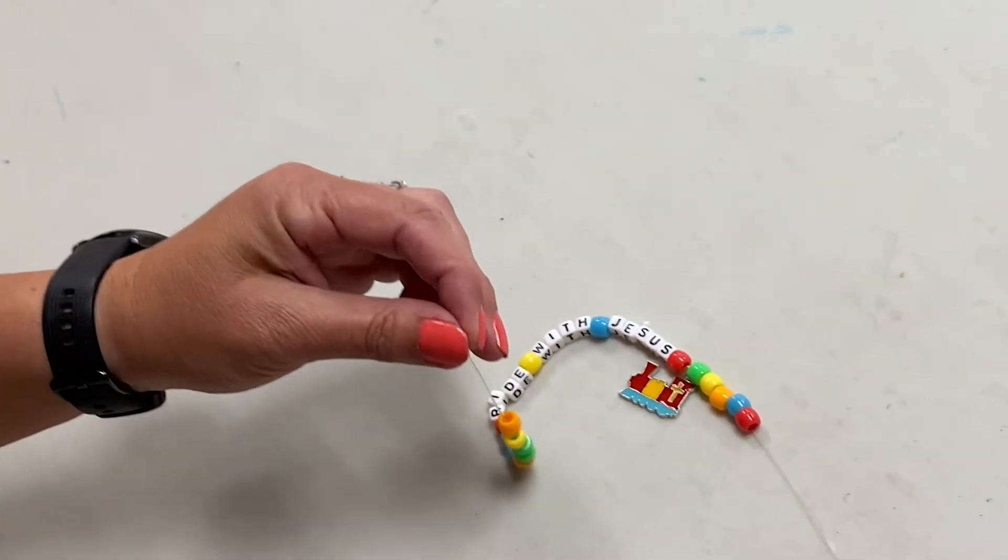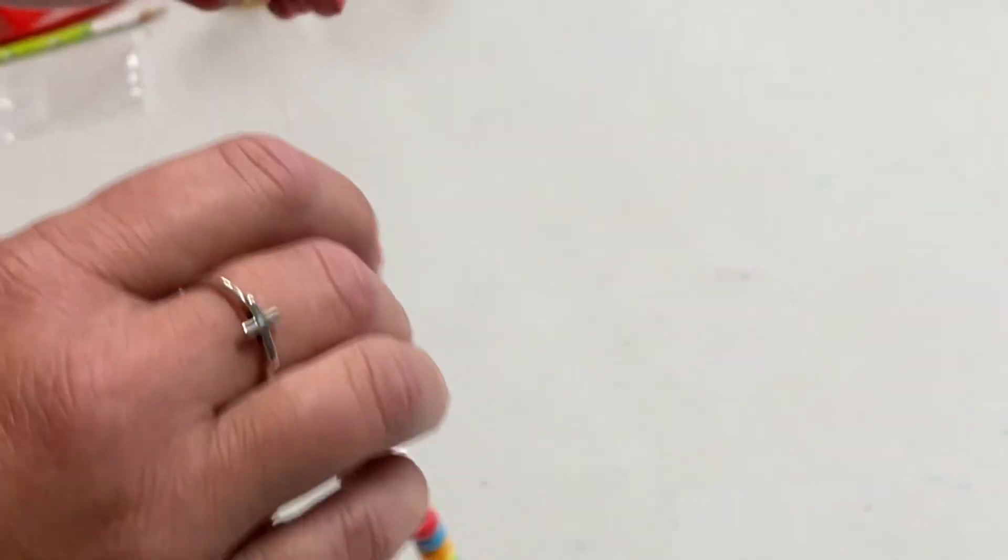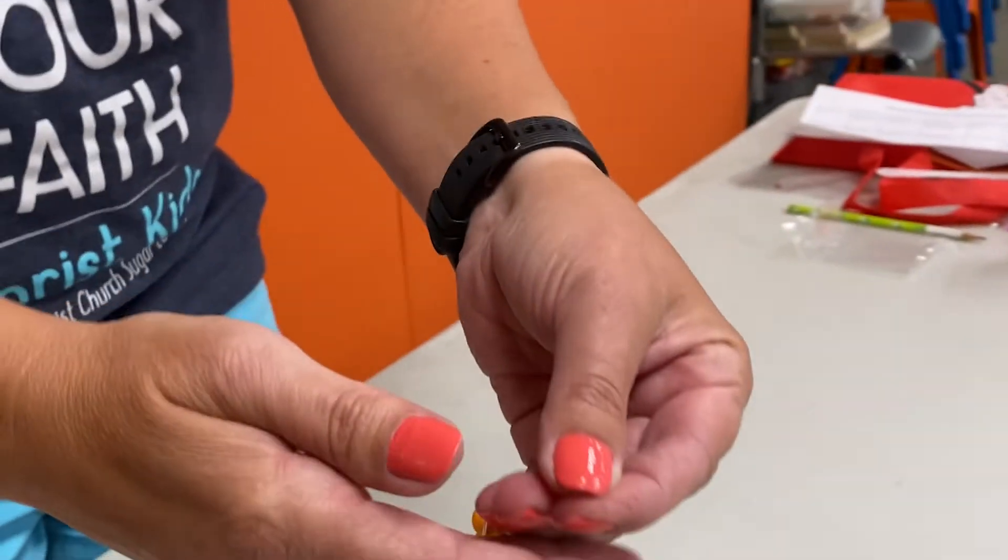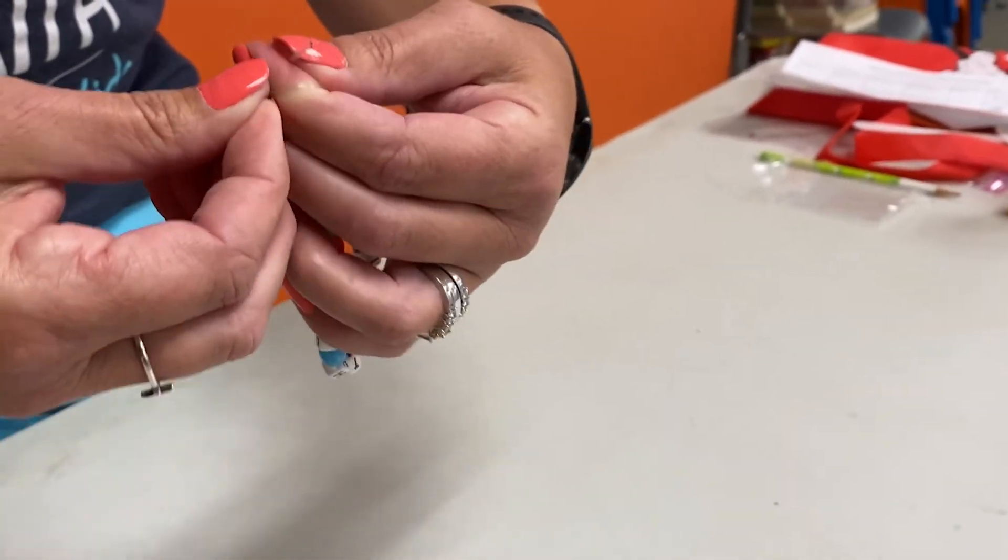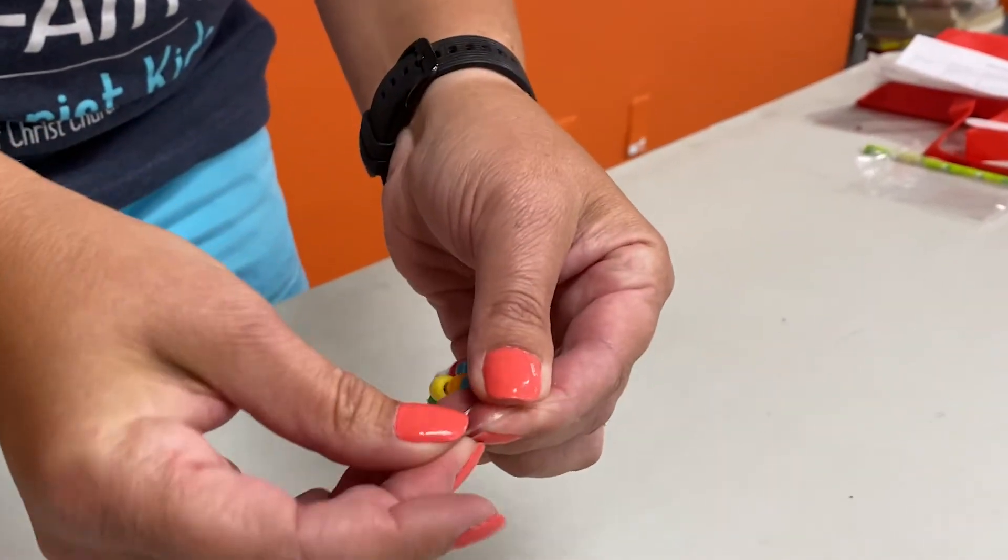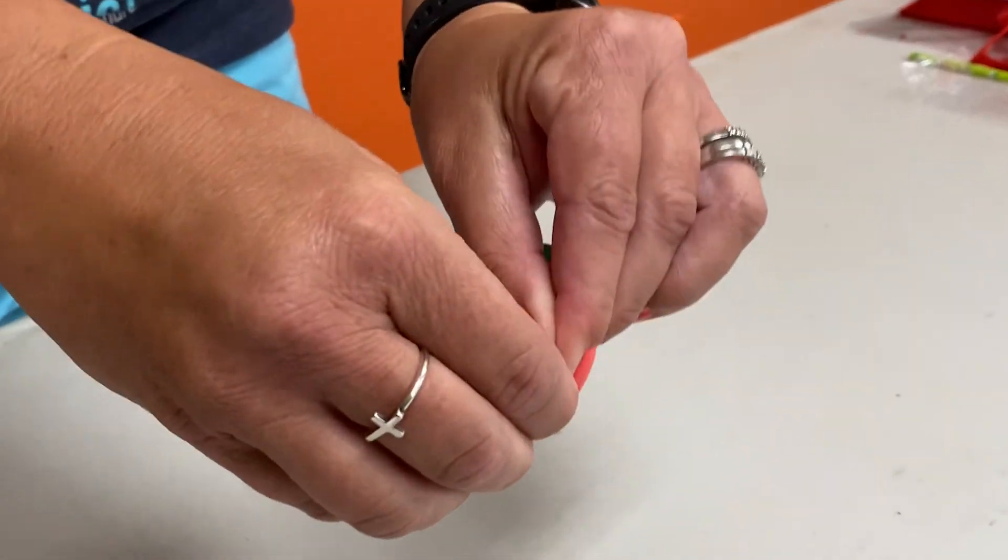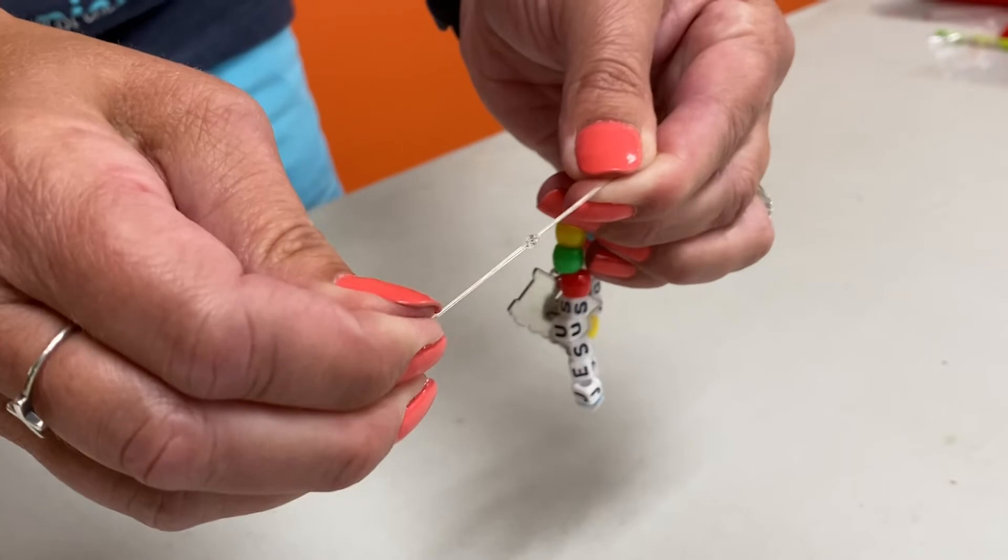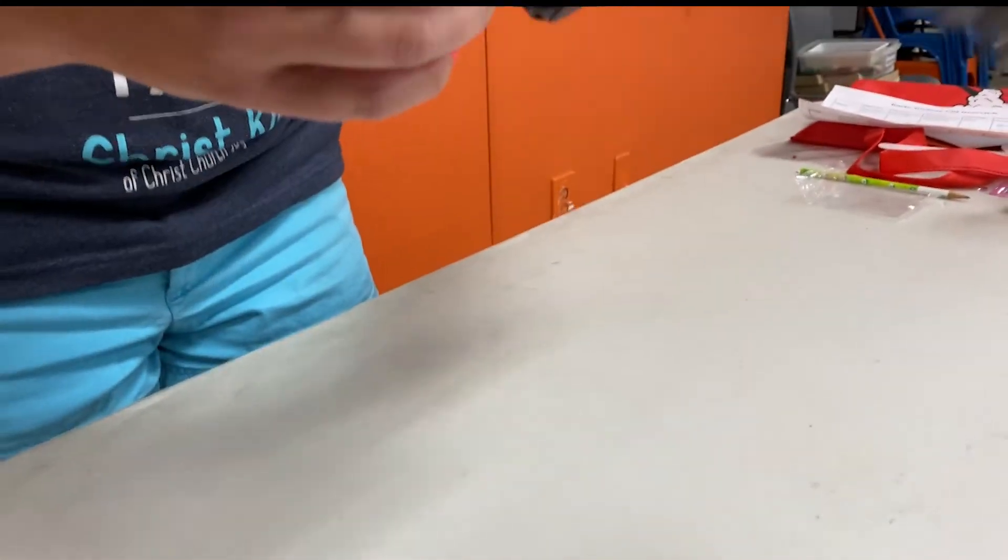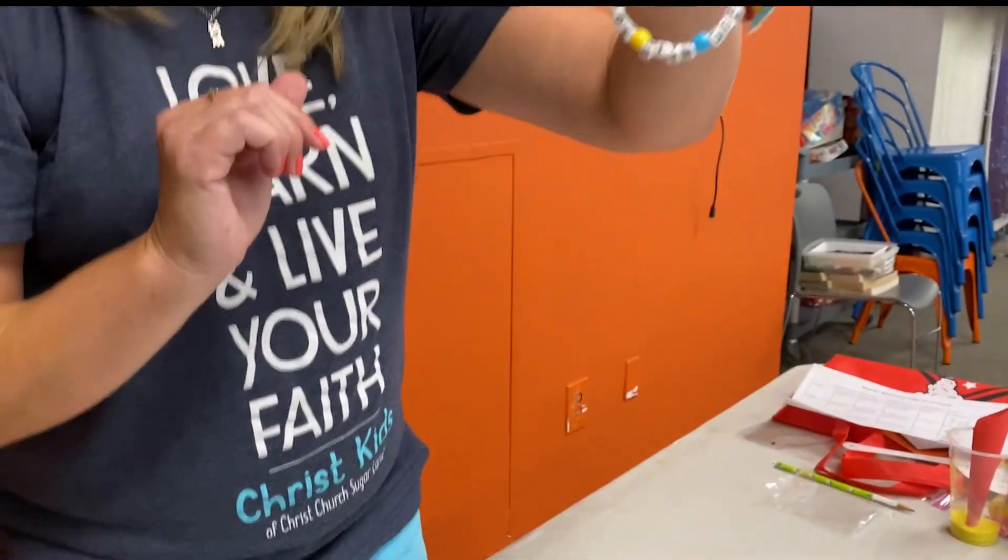And then here's the last part: tying it together. All right, we're going to bring both pieces together. I'm going to loop it around my finger. I'm going to take this end and my loop, and I'm going to push it through the loop. Once I make sure I have both pieces, pull tight. And then you have your Ride With Jesus bracelet.